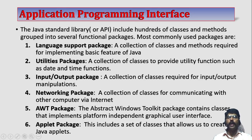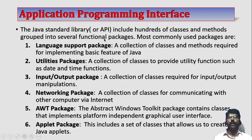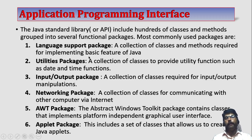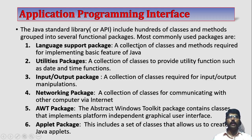Next one is called the Application Programming Interface — API. API is nothing but hundreds of classes and methods which are grouped into several functional packages. All these hundreds of classes are put in packages in hierarchical order. Some of the most commonly used packages are the Language Support Package — a collection of classes and methods required for implementing basic features of Java. Whenever you compile, these classes are automatically imported by your compiler.